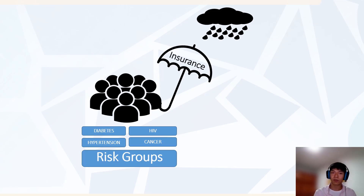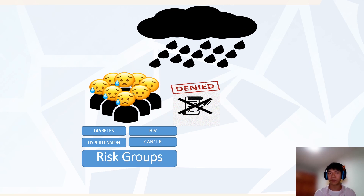These risk groups represent a large portion of the population that really needs life insurance to provide financial protection for their families and their worst case scenarios. But most of these people cannot buy life insurance, because insurance companies tend to deny these kinds of risks. The great number of these denials happen in the early stages of the underwriting process.